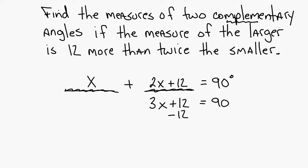Subtract 12 from each side. 3x equals 78. And then divide by 3. And x equals 26. So there's your smaller angle.